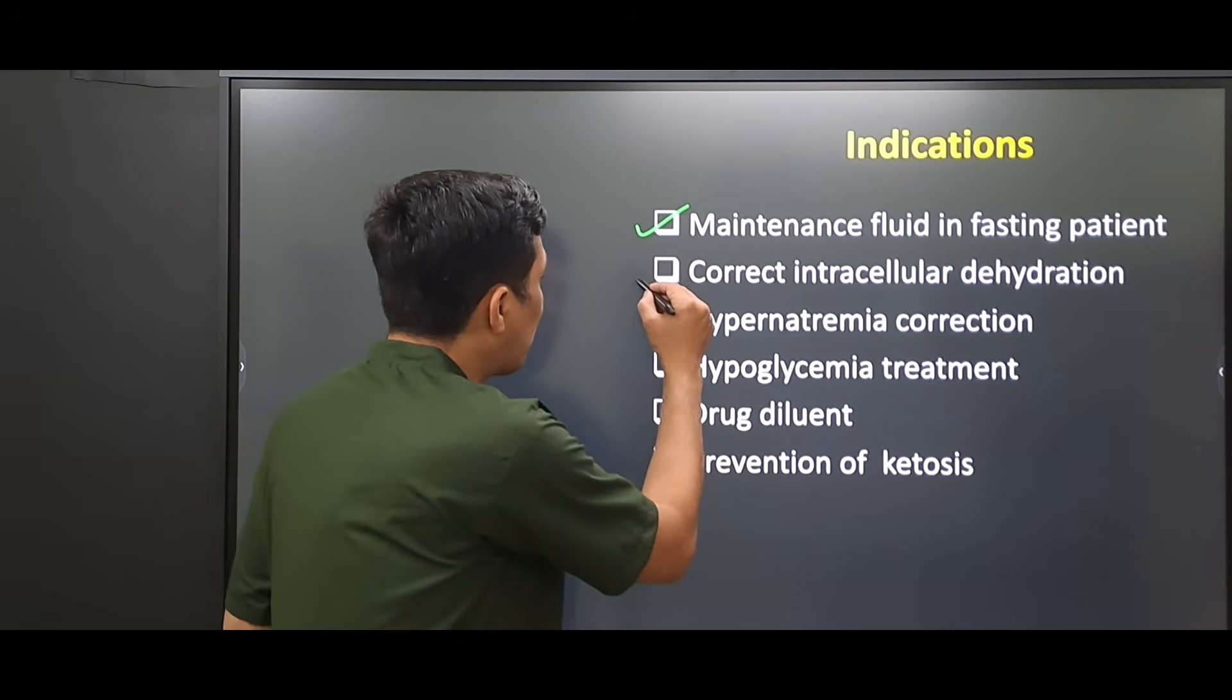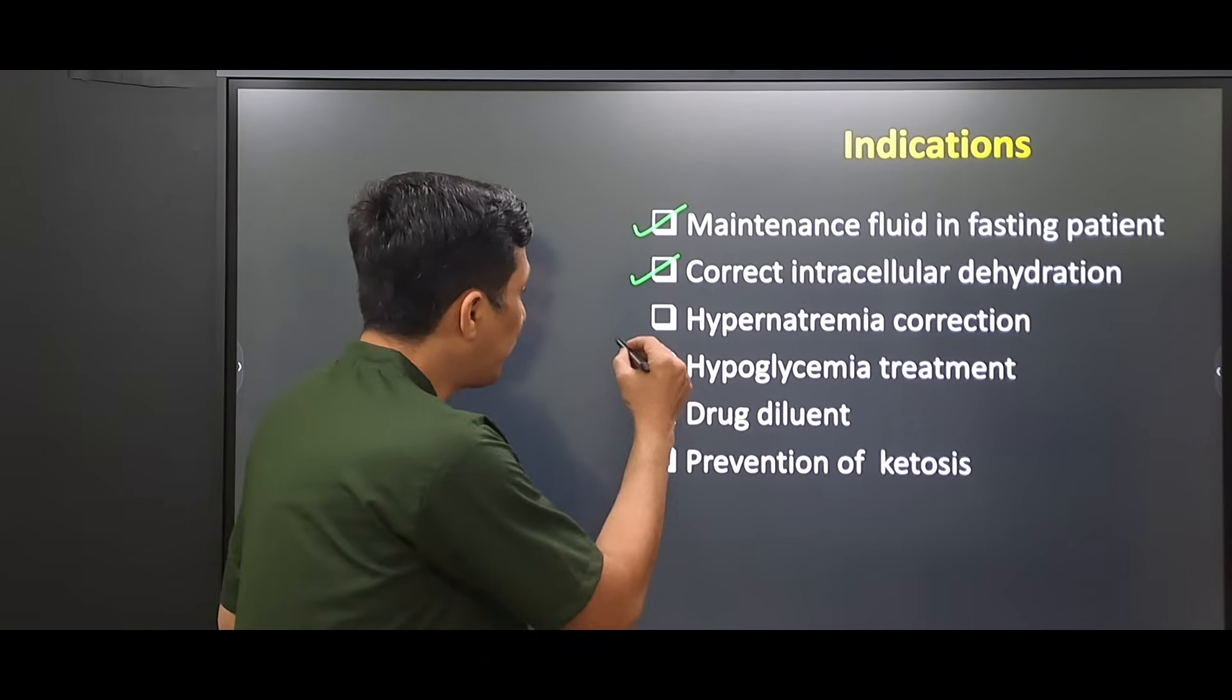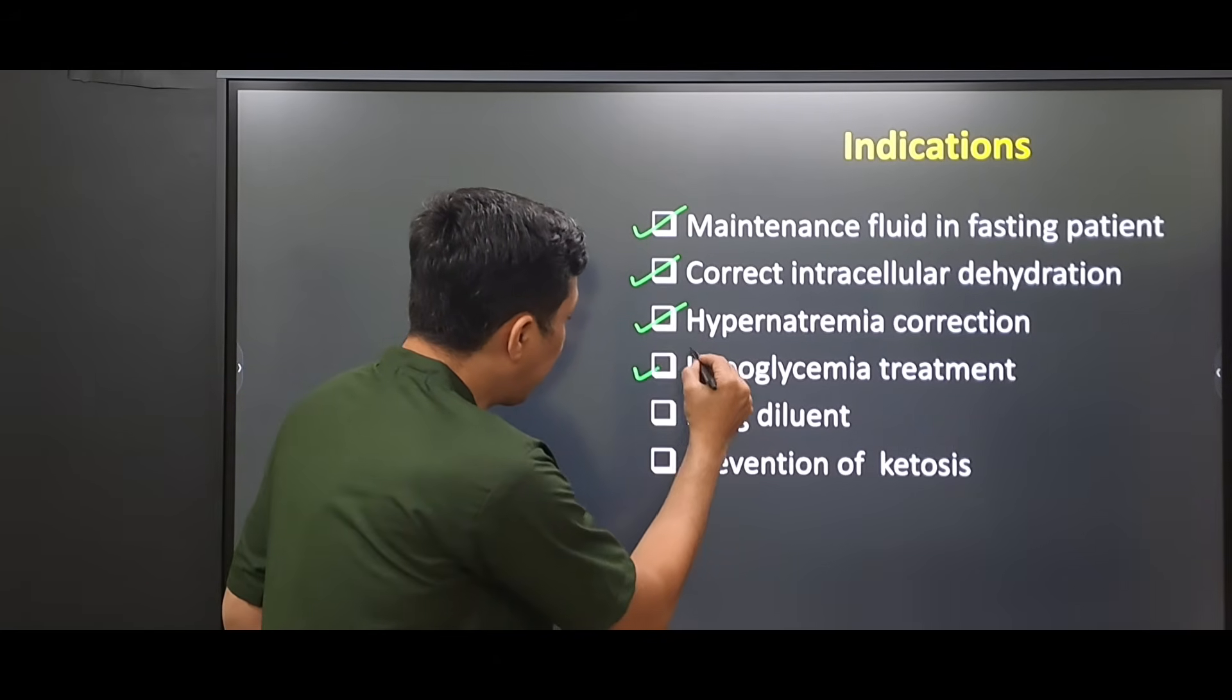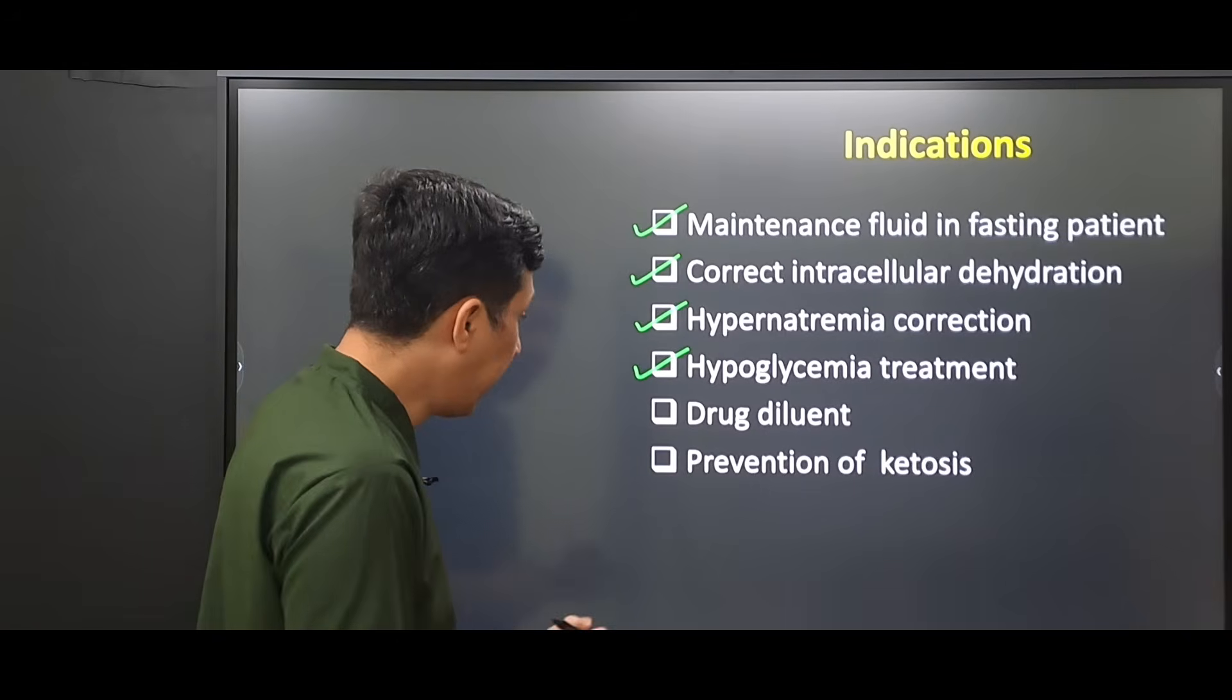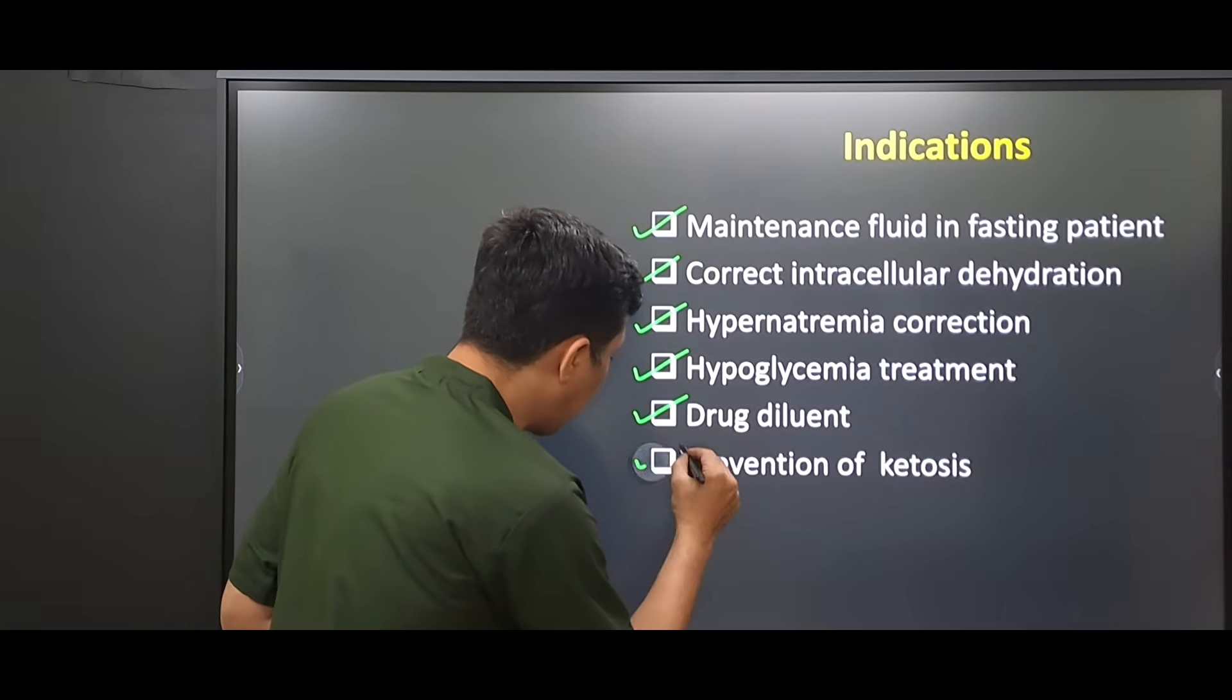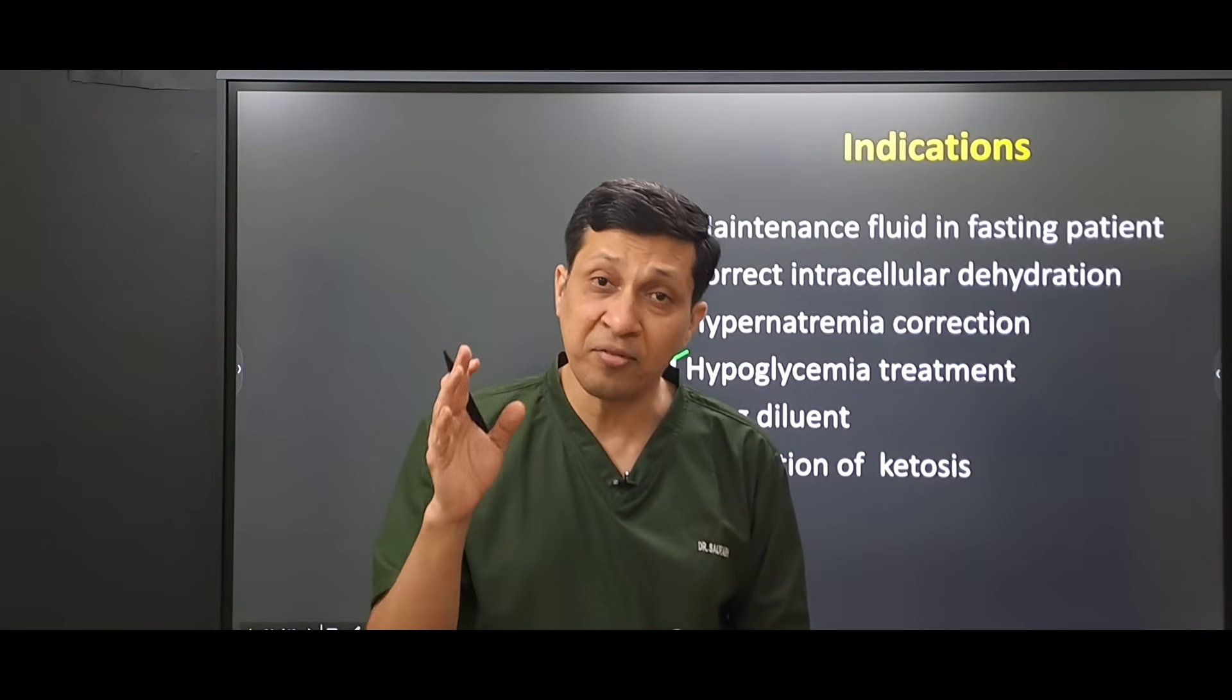It is also used to correct intracellular dehydration in severe vomiting, diarrhea, burns, etc. It is used for hypernatremia correction because it provides plain simple water. It is used in the treatment of hypoglycemia because of its glucose content. It is also used as a diluent for certain drugs, especially in the ICU, and as it contains glucose, it is also used in the prevention of ketosis, especially in cases of vomiting and high-grade fever.